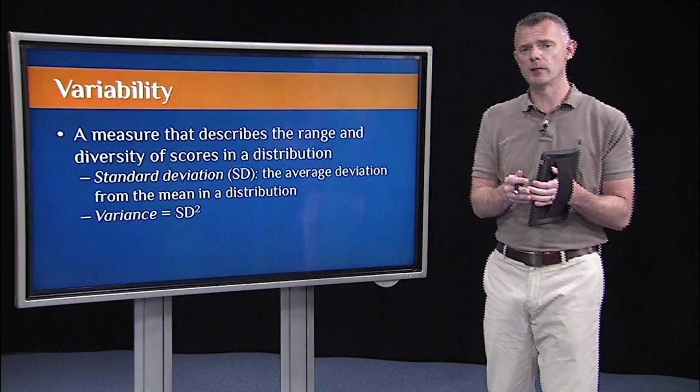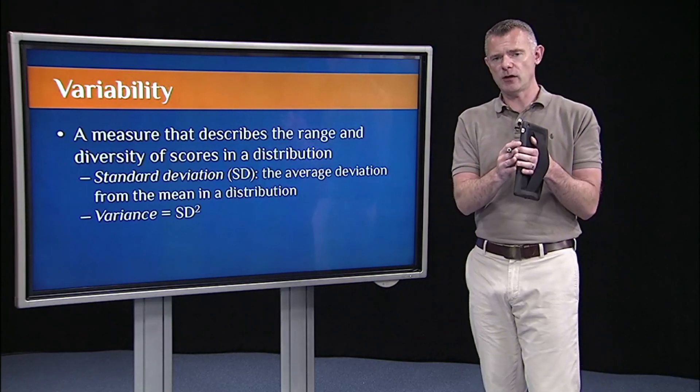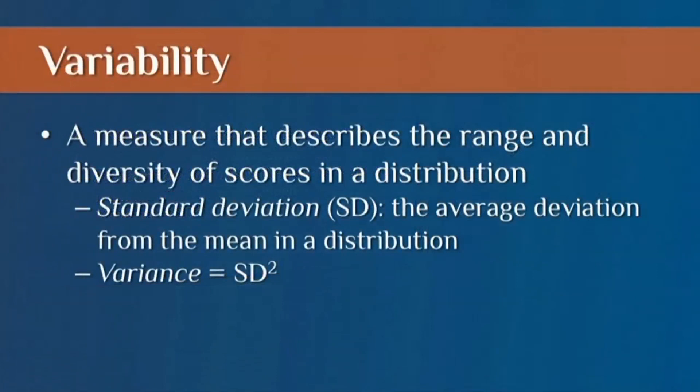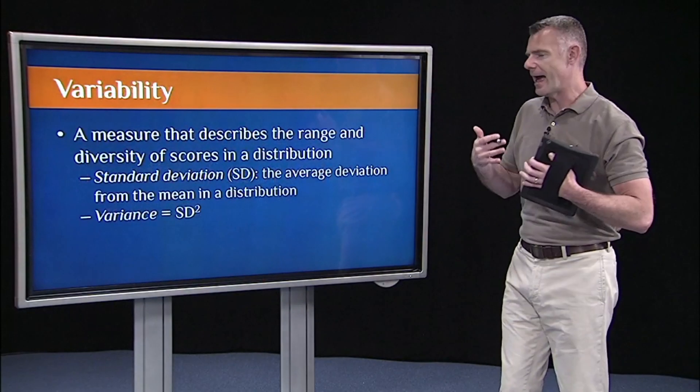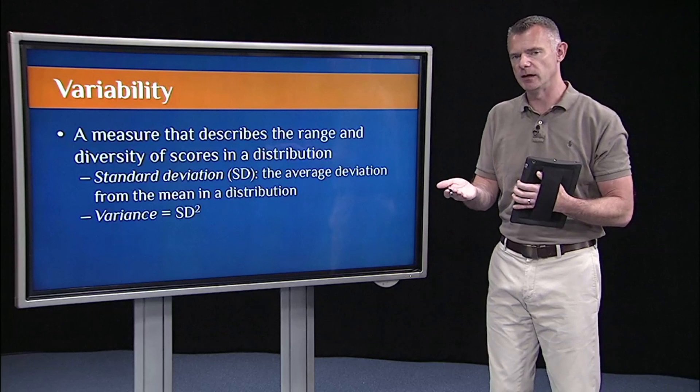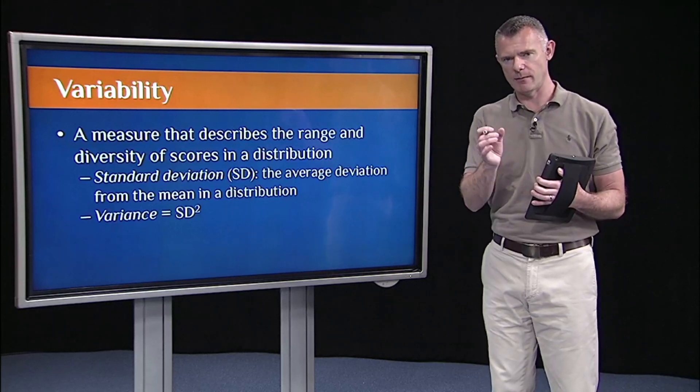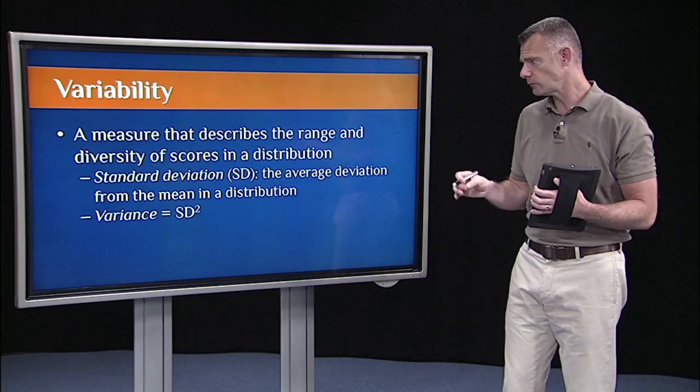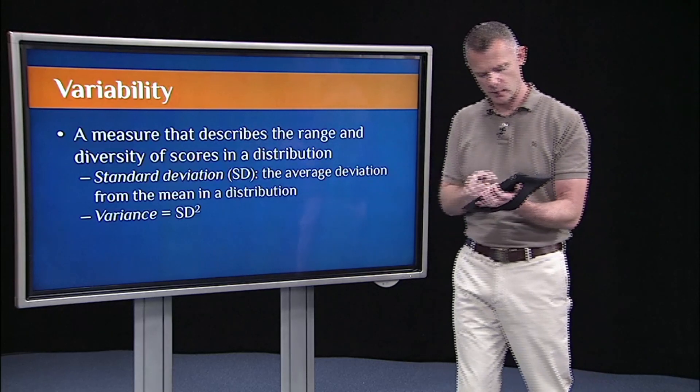What measures of variability do is they try to capture how much spread or how wide is the distribution. So the two main measures that we'll look at are standard deviation and variance. Variance is simply standard deviation squared. So standard deviation is just the average deviation from the mean in a distribution, and we'll see that mathematically in a moment.